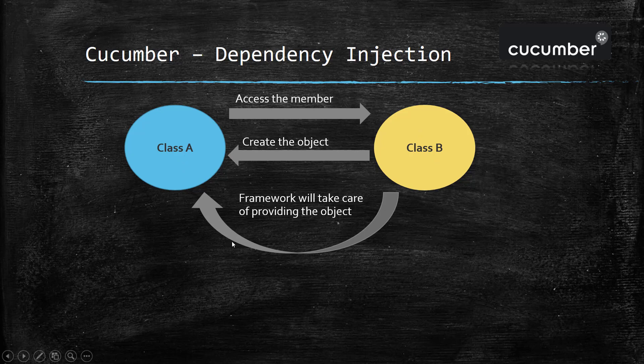In this case, the framework will automatically create the object of Class B and provide it to Class A for its utilization. In dependency injection, first the framework will create the object which is called dependency, and provide it to Class A which is called injection.